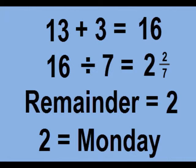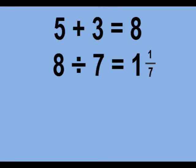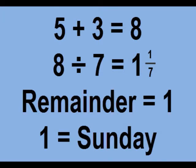Let's try one more. Take the date — let's say the 5th — plus 3 is 8. Divided by 7 is 1 and 1 seventh. The remainder is 1, so it's a Sunday. The same formula each and every month. Now you know how it works and what you're going to do.